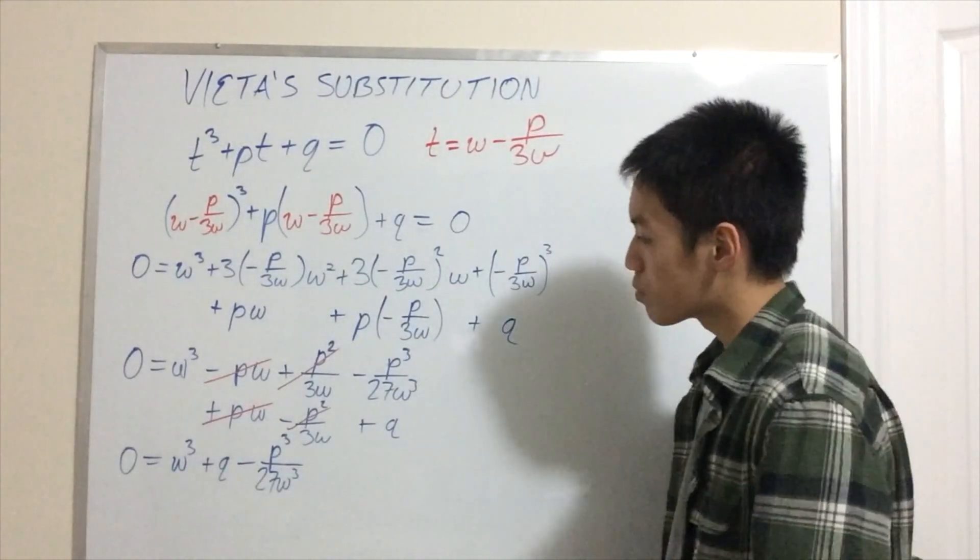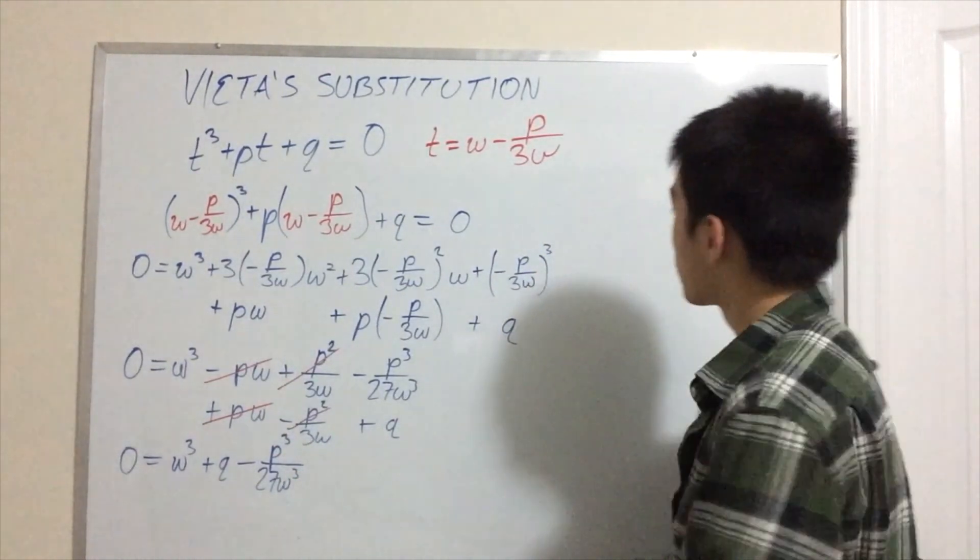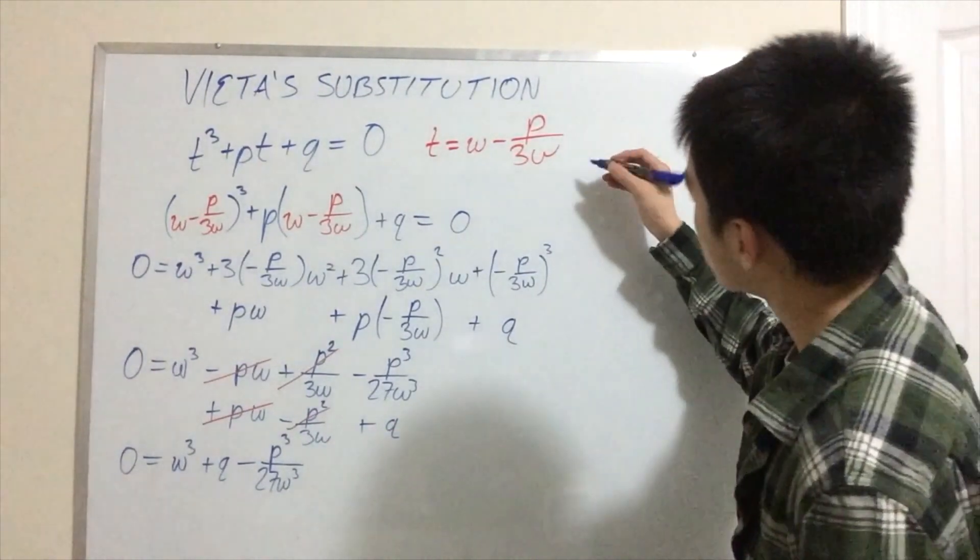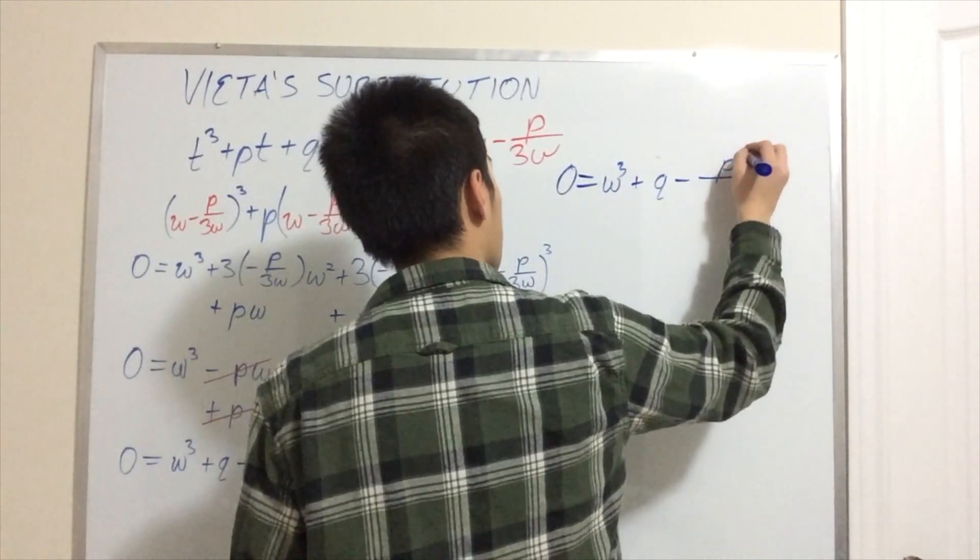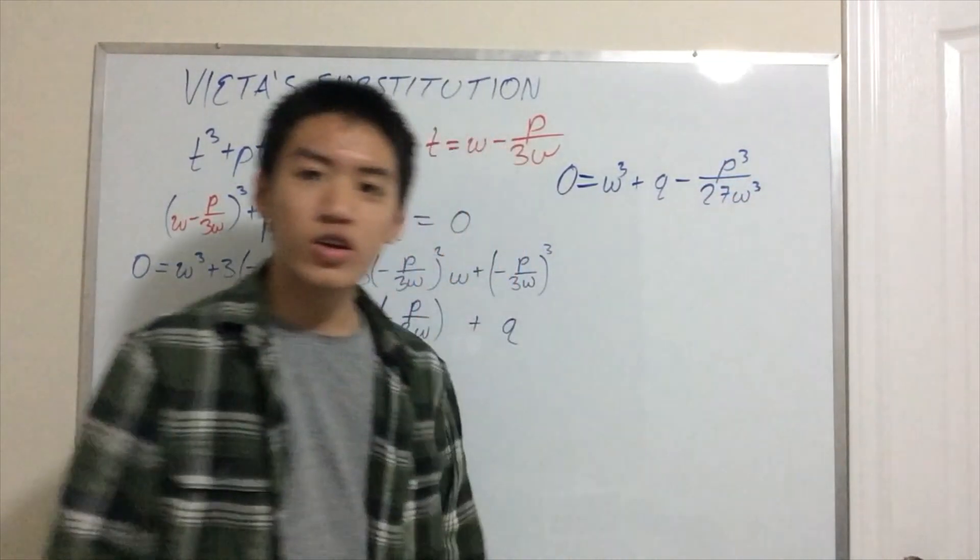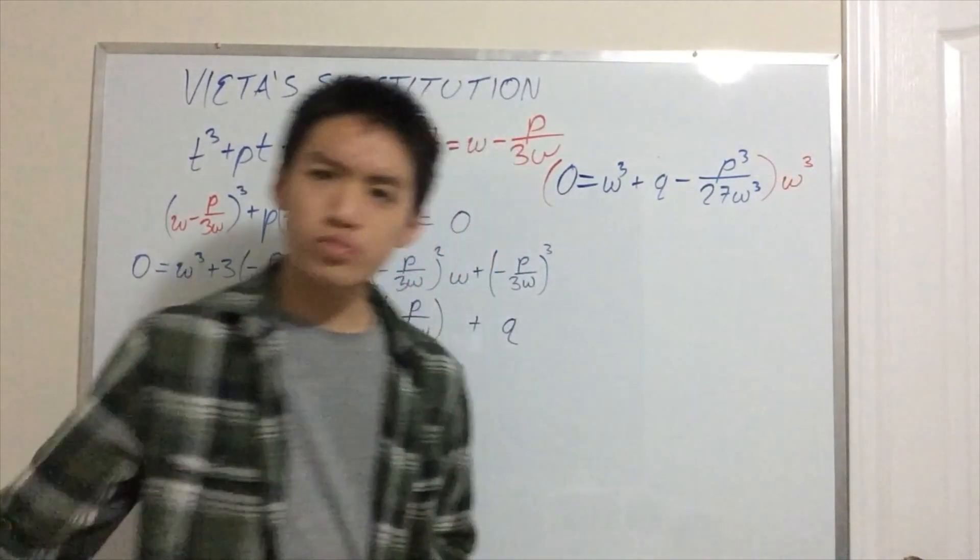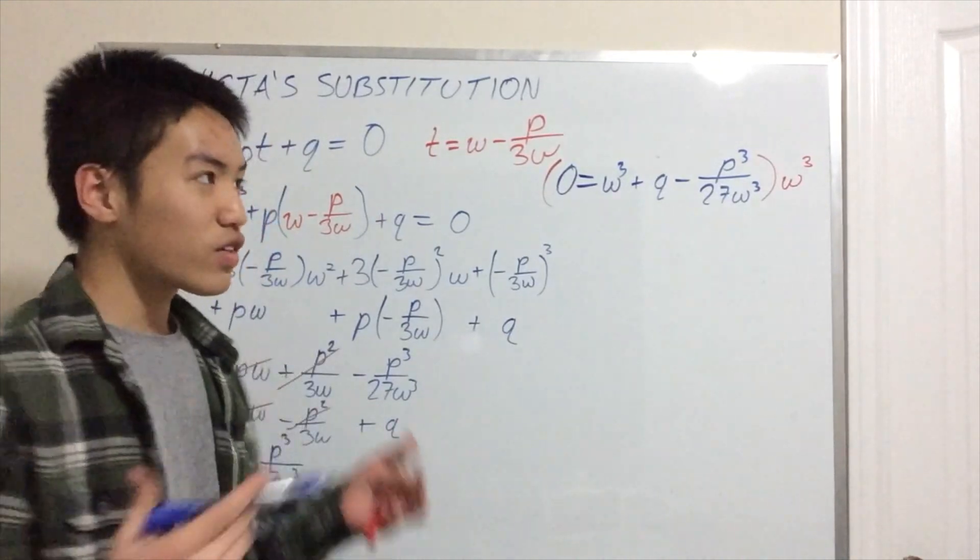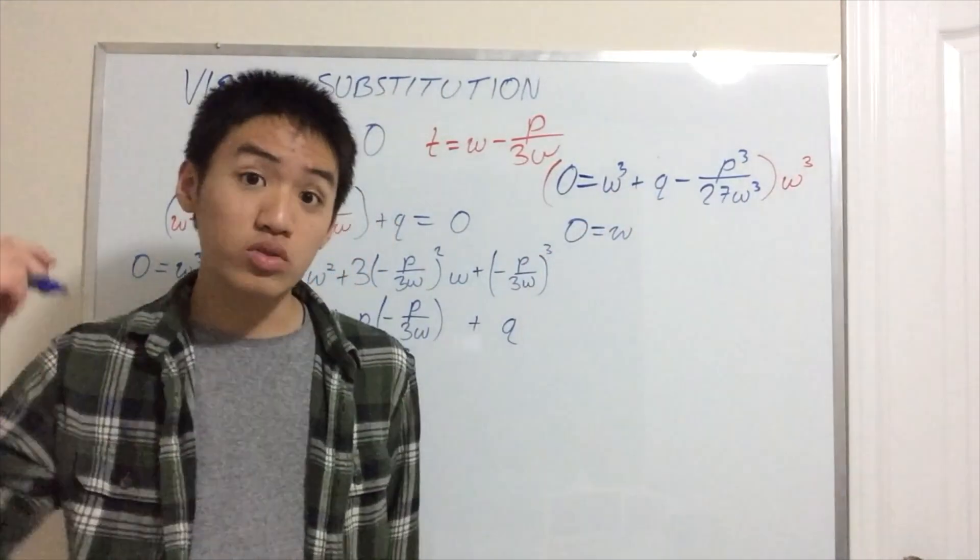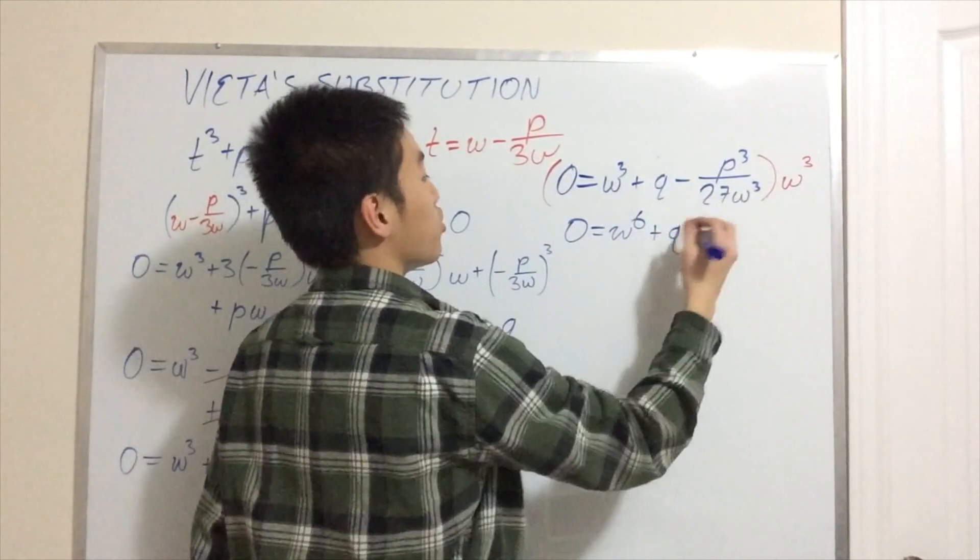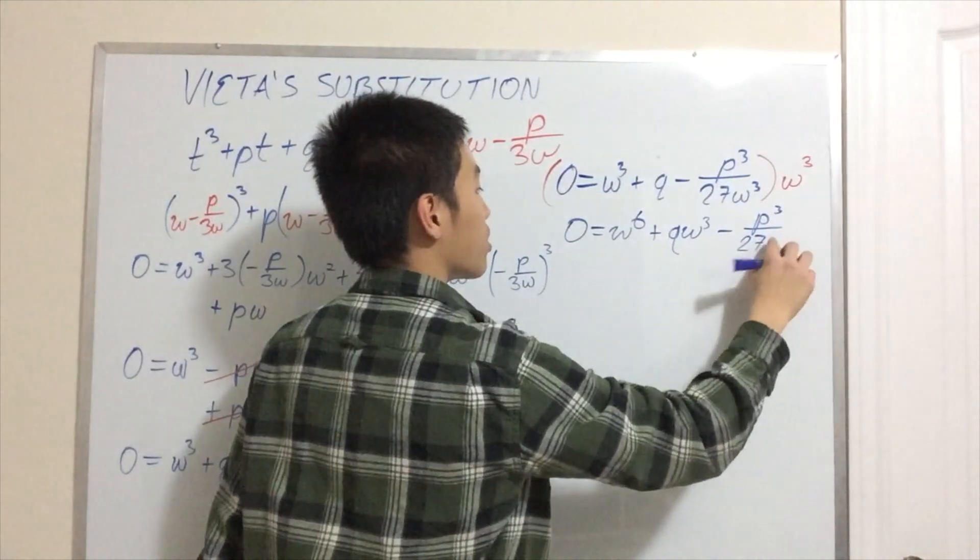And what we're left with is w³ + q - p³/(27w³). And I've written it down here in a different order. You still get the gist. 0 = w³ + q - p³/(27w³). We're running out of space, so I'm going to write this up here again. So we have a little bit of working space. 0 = w³ + q - p³/(27w³). This is the last part that we actually saw earlier. We're going to multiply the entire thing by w³. Why do we do that? To get the quadratic equation, or rather the sextic equation. It's actually a disguised quadratic equation.